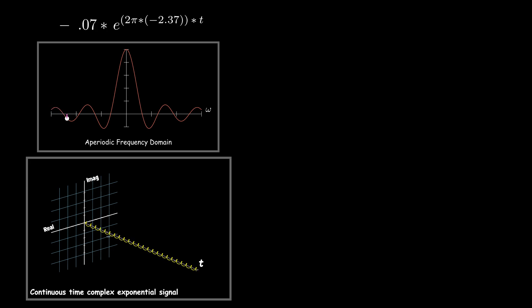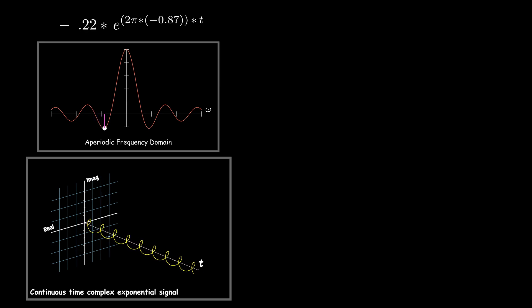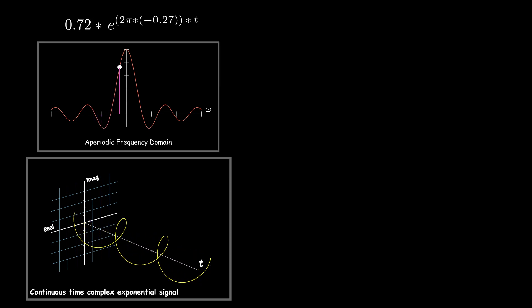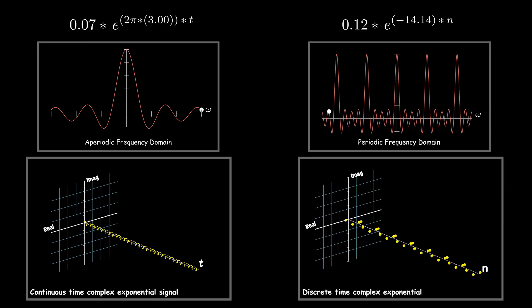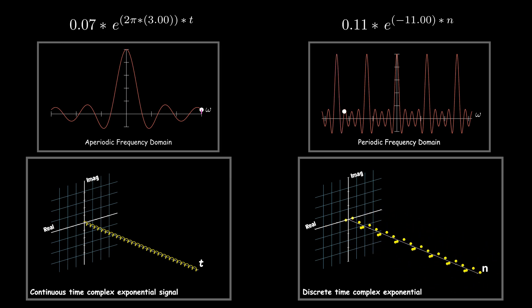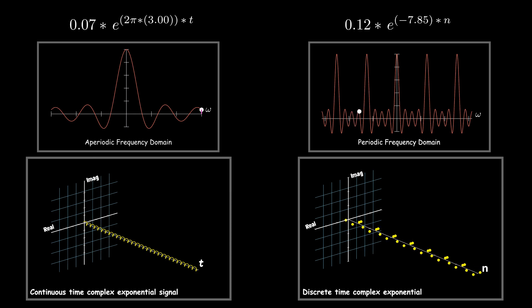Just from analogy, as we did in the previous videos, each point in the frequency domain corresponds to a complex exponential in the time domain. The frequency and magnitude of the complex exponential is determined by the x and y values of the corresponding point in the frequency domain. But since here the frequency domain is periodic, each point in the frequency domain corresponds to a discrete complex exponential in the time domain. So each point in a periodic frequency domain represents a discrete time complex exponential.